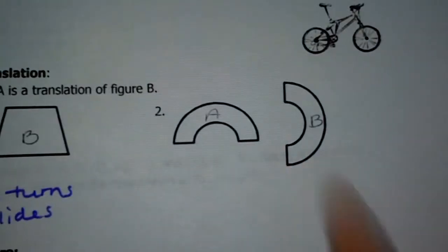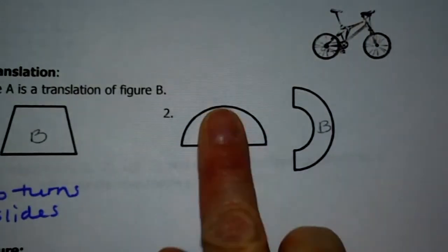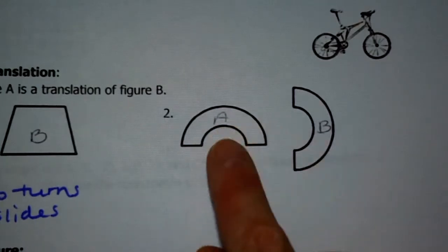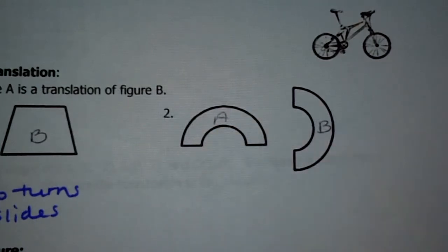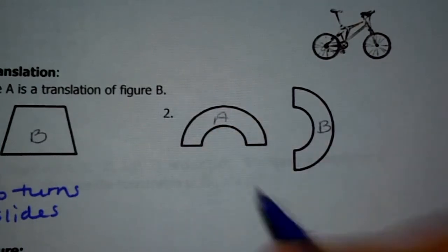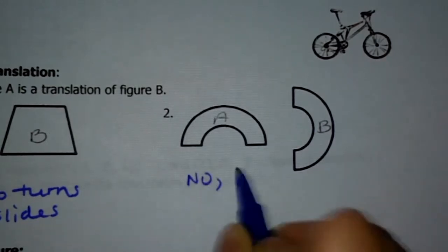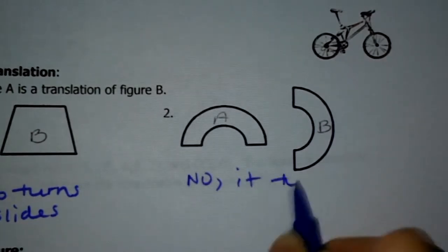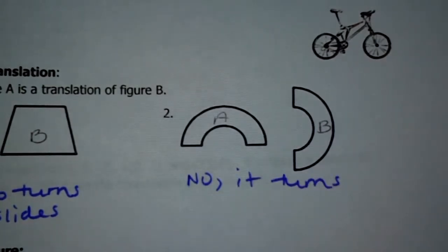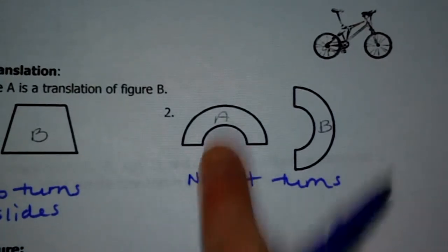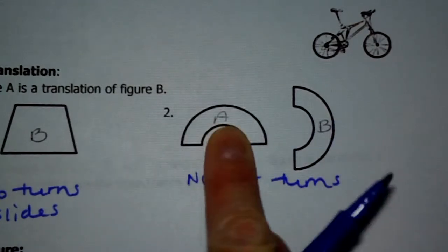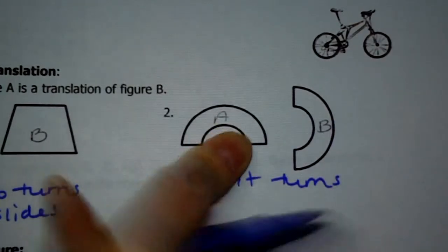When you look at number two, here's A and here's B. Now to get from A to B, this doesn't look like a rainbow anymore over here — it needs to still look like a rainbow if it was a translation. So this would be a no, because it turns. Again, when you're dealing with translations, it's a slide. It's staying in the same exact position. It can move up, down, right, left, but you can't turn it. No turning.